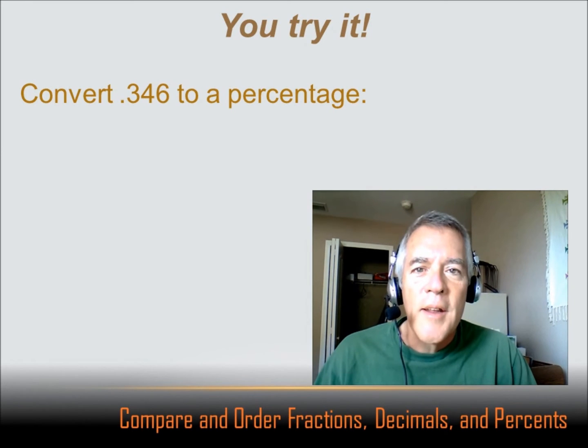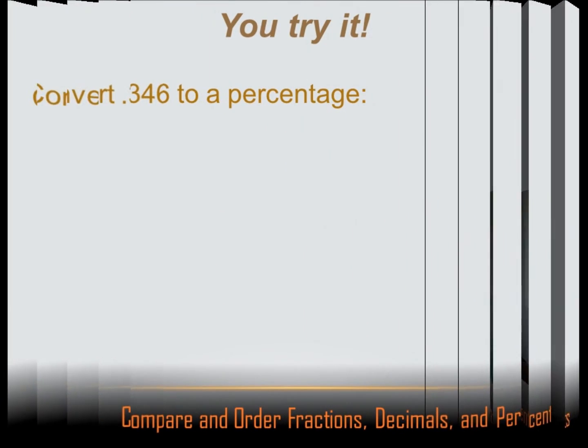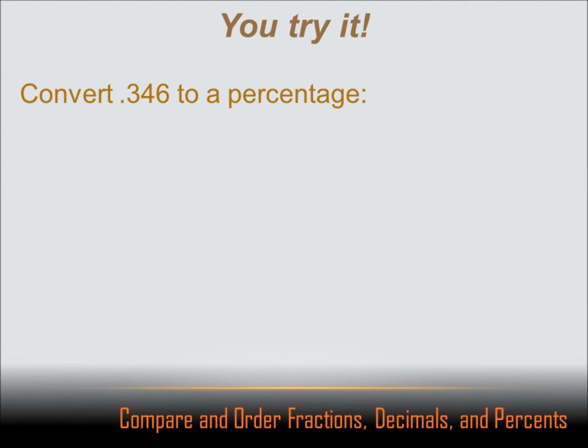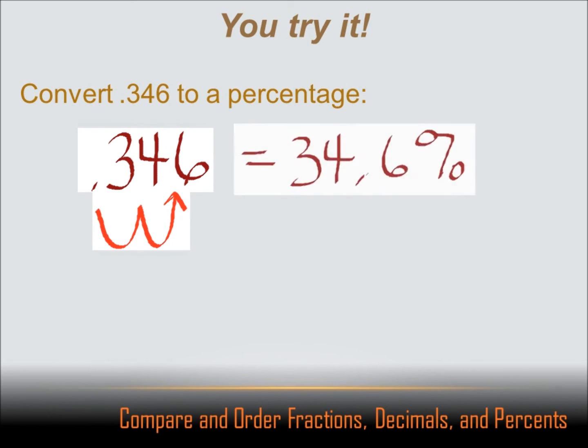Now you try this one. Hit the pause button, do the problem, and then hit the forward key to move on to the answer. Convert 0.346 to a percentage. Hmm, what do we do? Oh, I remember, if we're going to convert a decimal to a percentage, we multiply it by 100, or we move the decimal point 2 to the right. So I've got 0.346, I move the decimal 2 to the right, and I get 34.6%.